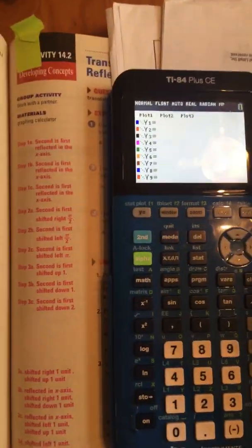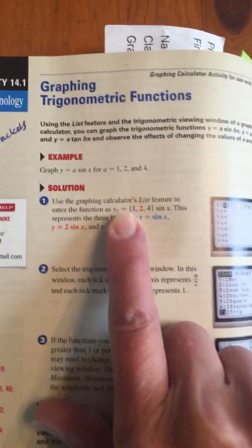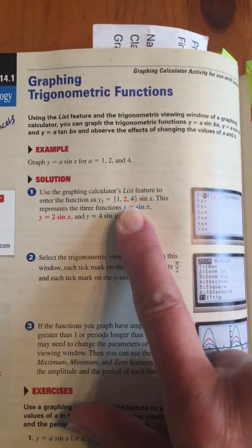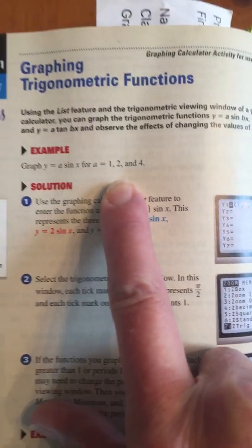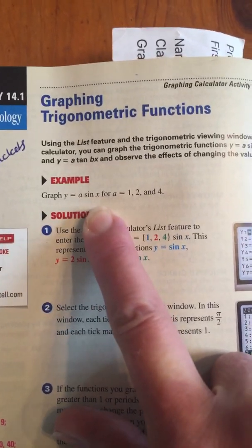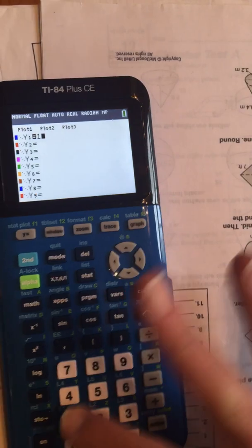Now go to y equals, and I'm going to show you two different ways to do it. The one way they showed you how to do it is to graph all of these at once. I'm going to show you first how to graph them separate. So they want you to graph y equals a sine x, and they want a to be 1, 2, and 4. So we could just put it in.